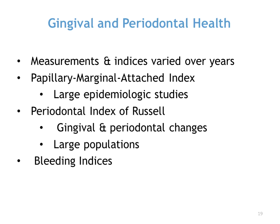We also have indices for gingival and periodontal health. The Papillary Marginal Attached index is one of them. The Periodontal Index — not to be confused with PLI for the plaque index — is another, and these have been modified over the years. Bleeding on gentle probing or flossing is an early sign of gingival inflammation, and often the first sign of disease before color changes and enlargement of gingival tissues occur. So we use a bleeding index for that.